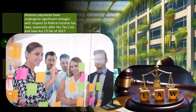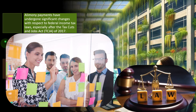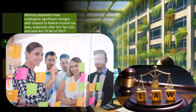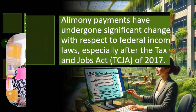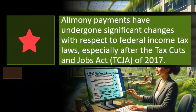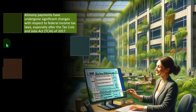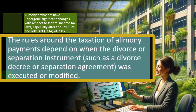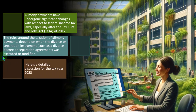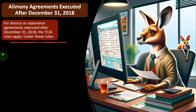If you put the change in retroactively, it's going to mess up people's planning in the past. We have a situation like that with regards to alimony. Alimony payments have undergone significant changes with respect to federal income tax laws, especially after the Tax Cuts and Jobs Act, the TCJA of 2017. The rules around the taxation of alimony payments depend on when the divorce or separation instruments, such as a divorce decree or separation agreement, was executed or modified. Here's a detailed discussion for tax year 2023.